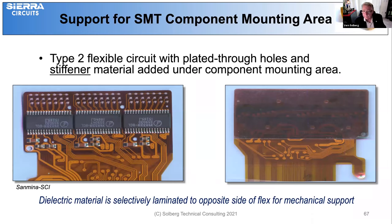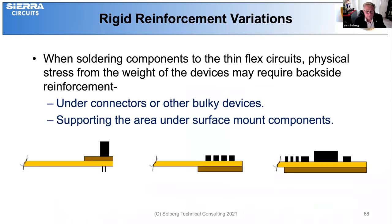We can also look at reinforcement with rigid materials, especially in areas that are going to be exercised — such as a connector that has to be extracted or replaced several times — it just strengthens that area so the solder joint is not stressed. For surface mount areas, having a rigid backing under that area will also reduce any stress transferred to the solder joint. All three of those approaches are quite common.